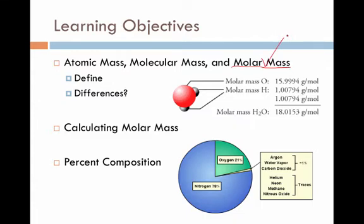After that, we're going to talk about the process of calculating molar mass as a numerical value we're going to be needing to use for conversions. And then finally, we're going to finish off with the idea of percent composition, discovering what fraction of a total compound is made up from each element.